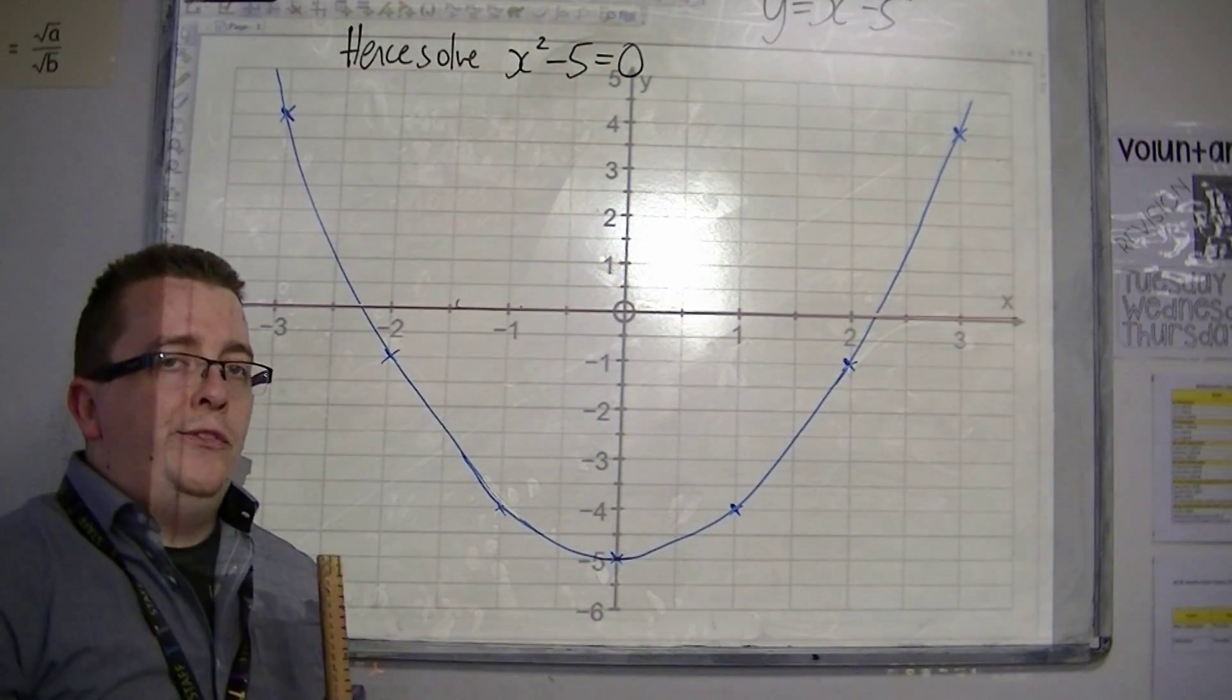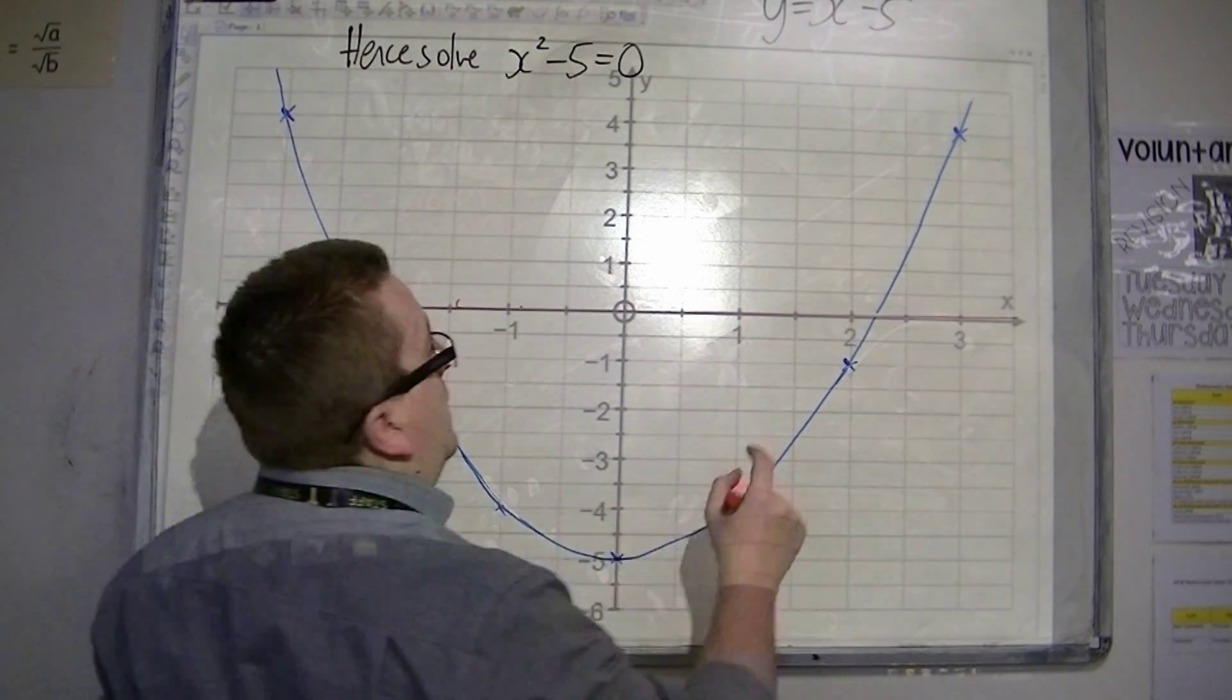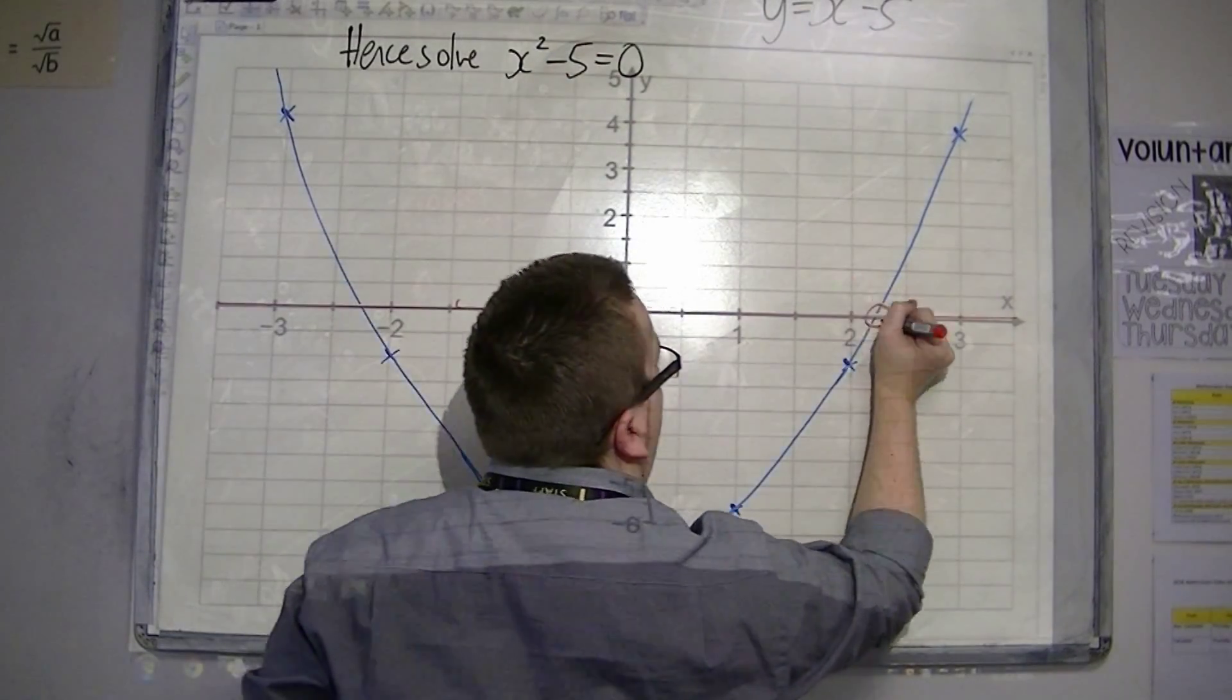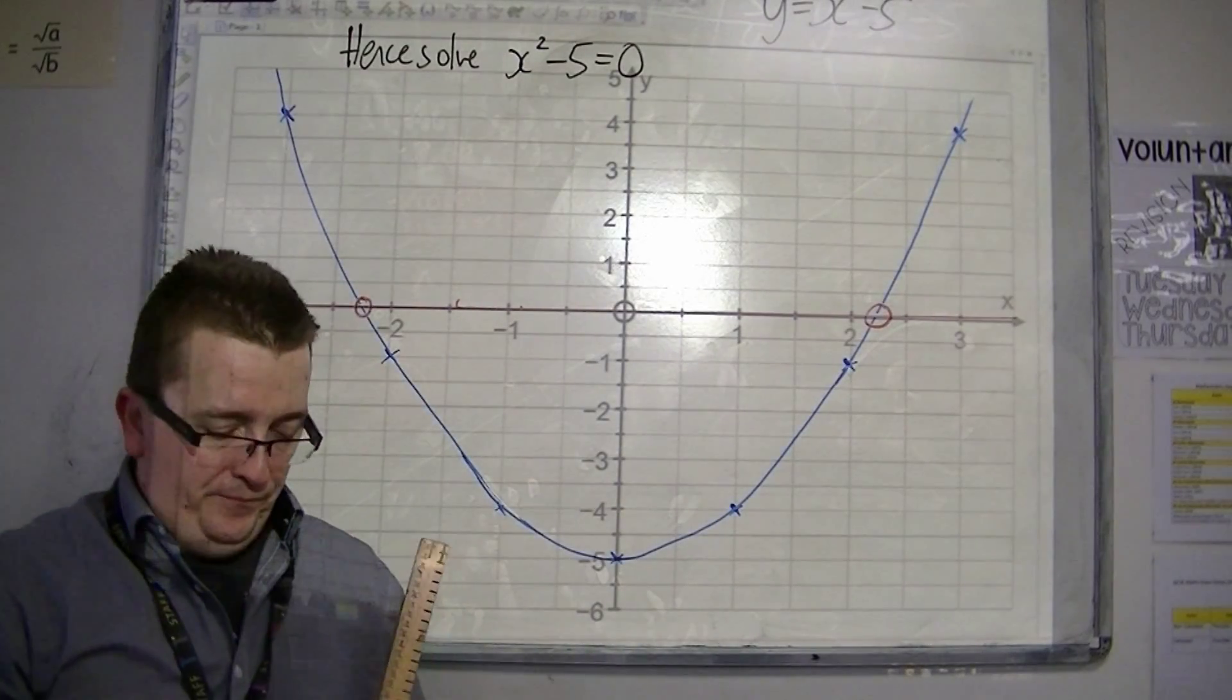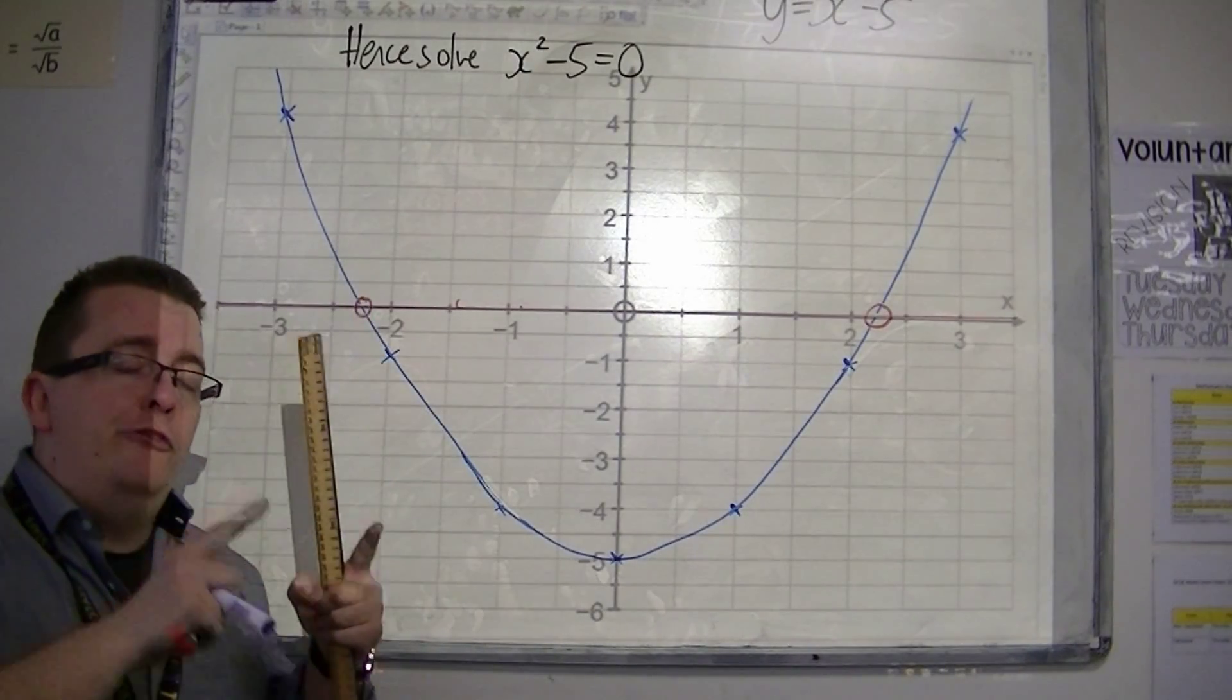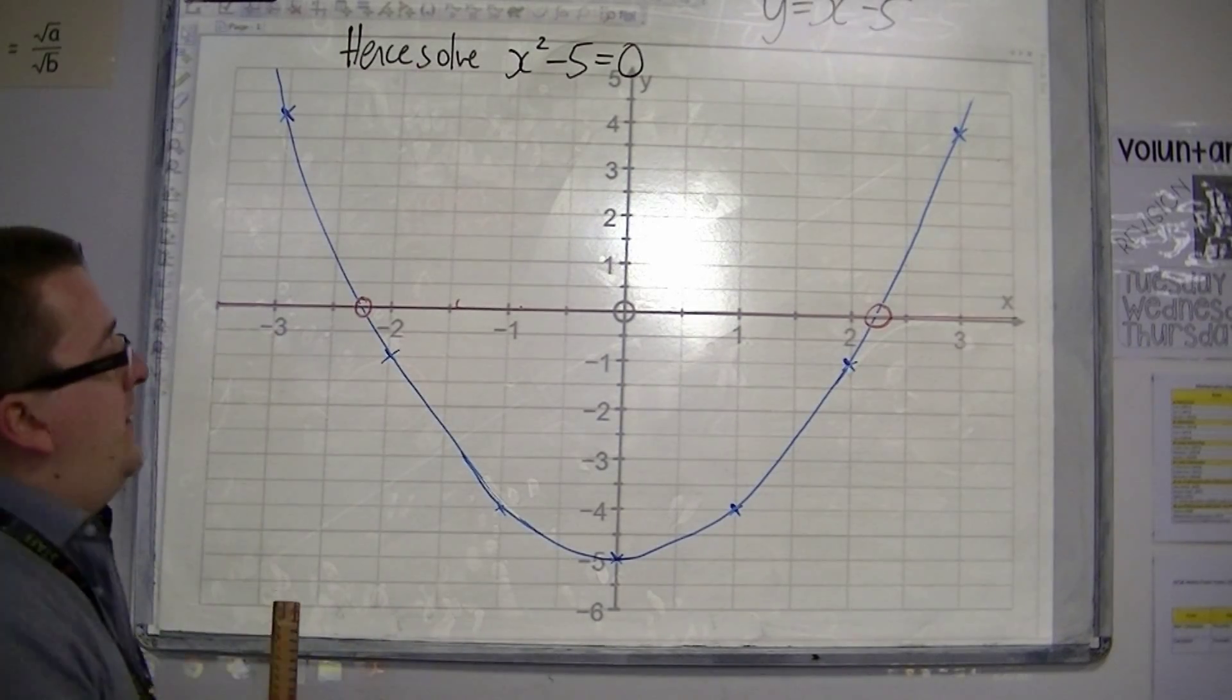So, y equals 1 is there. You can see that we're saying, when is y equals 0 the same as x squared minus 5? And you're identifying where they cross, those two points. So, what you need to do is read off from your graph those two points, those two x's.